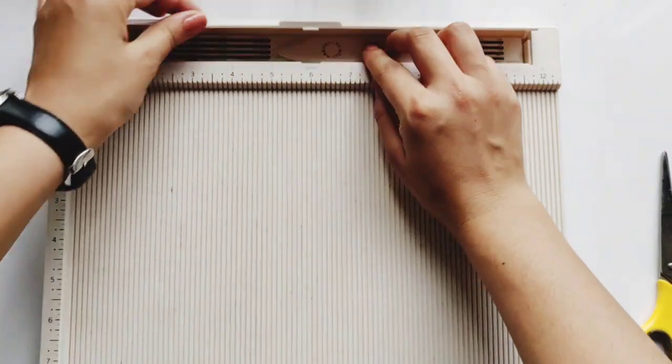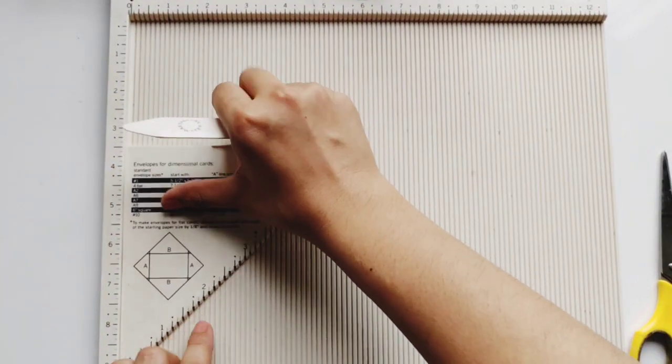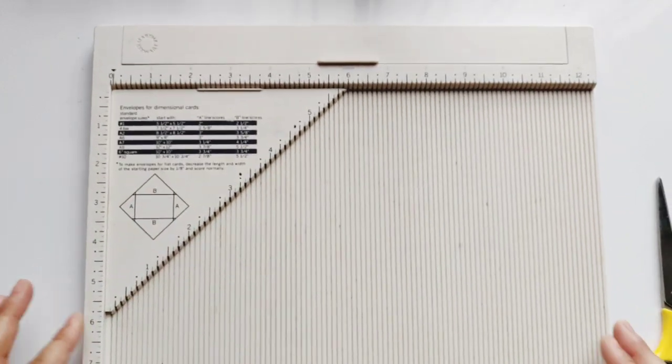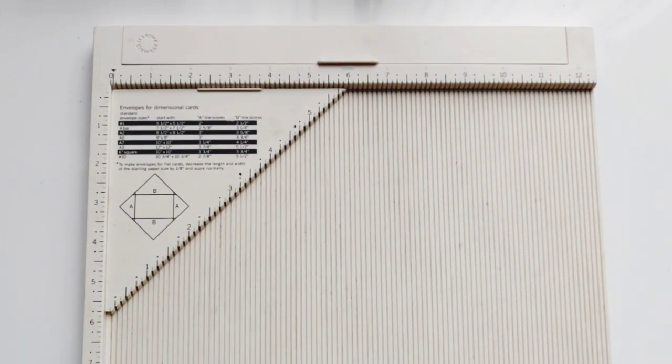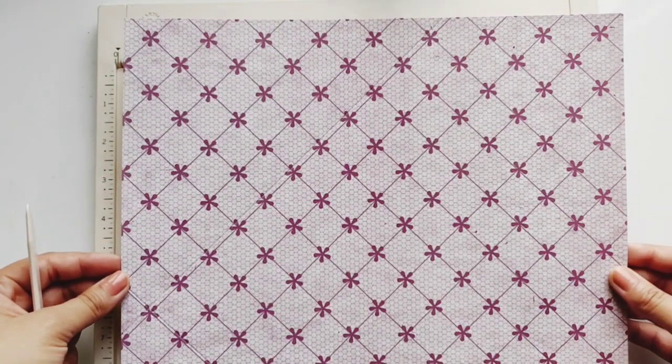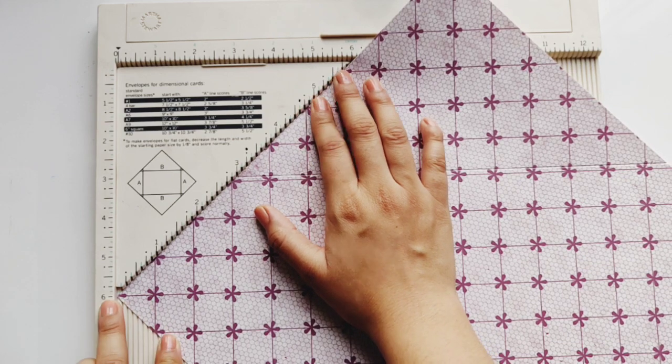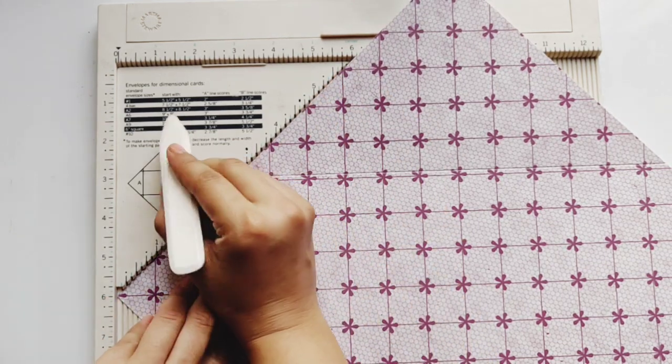Apart from this, the last use that I want to show you for scoring board is using it for making envelopes. So Martha Stewart scoring board that I'm using here comes with this tool that is on the back of the scoring board. I will place the paper on this grid mat in this diagonal direction and score it at the given points according to the guidelines given on this tool.